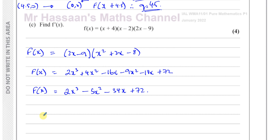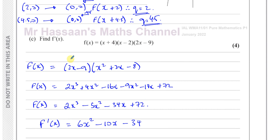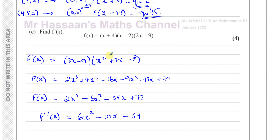Now we differentiate to find f'(x). Multiply by the power and reduce the power by 1: 3×2 gives 6x², then 2×(-5) gives -10x, then the constant term for -34x drops the x to give -34. So f'(x) equals 6x² minus 10x minus 34. That's part C done.